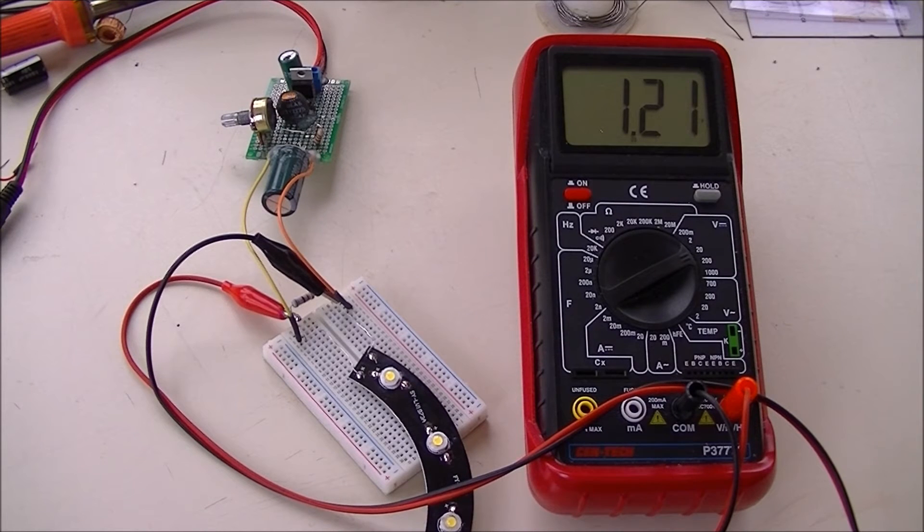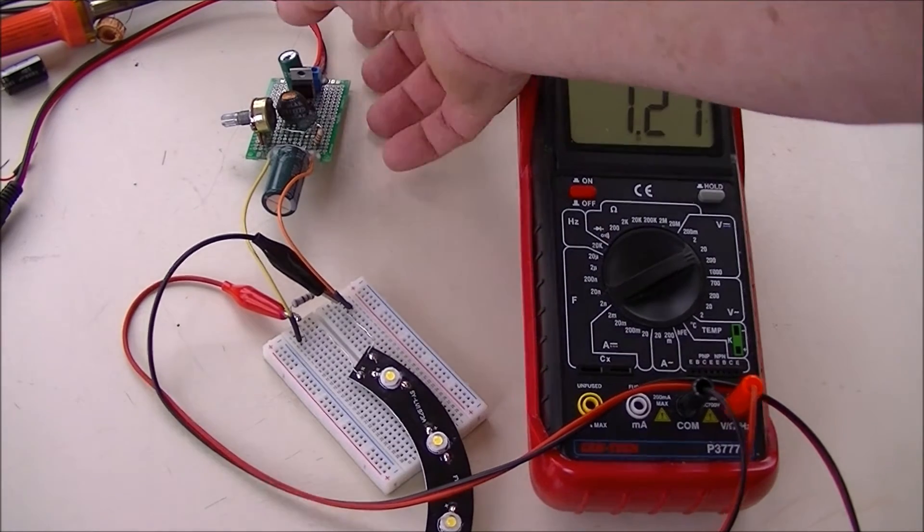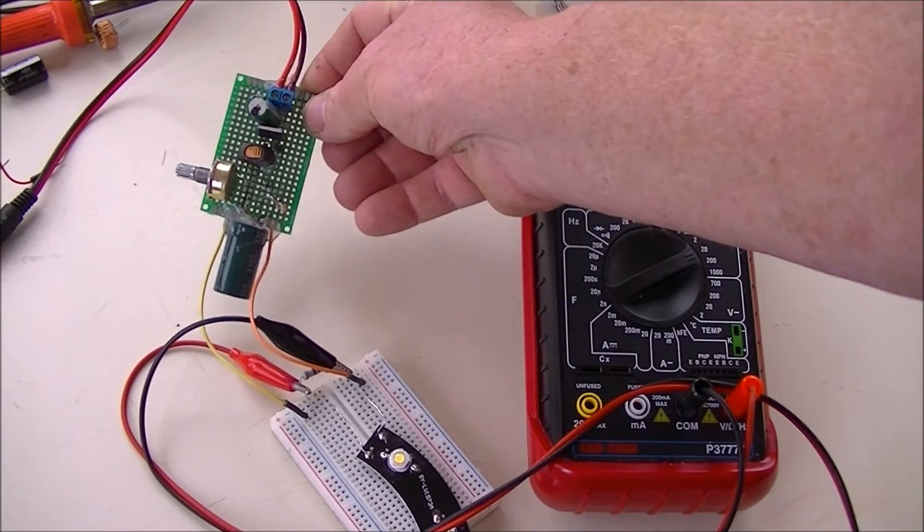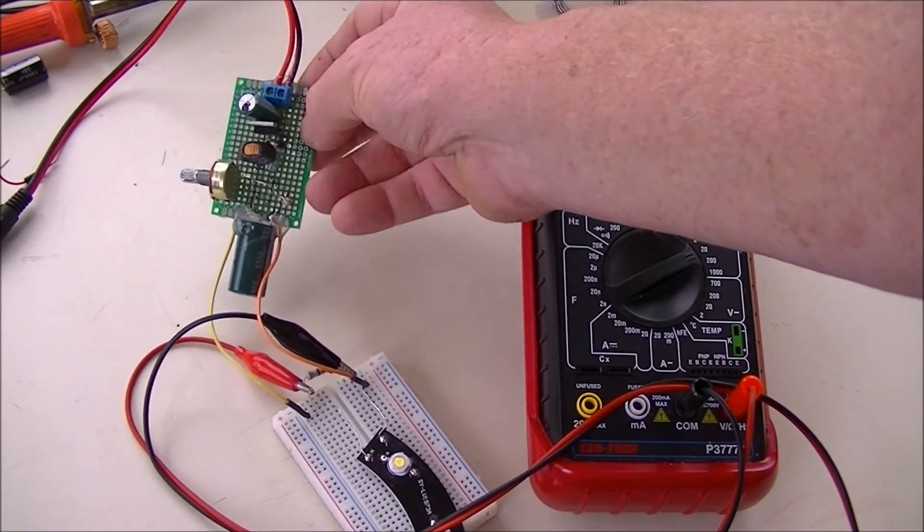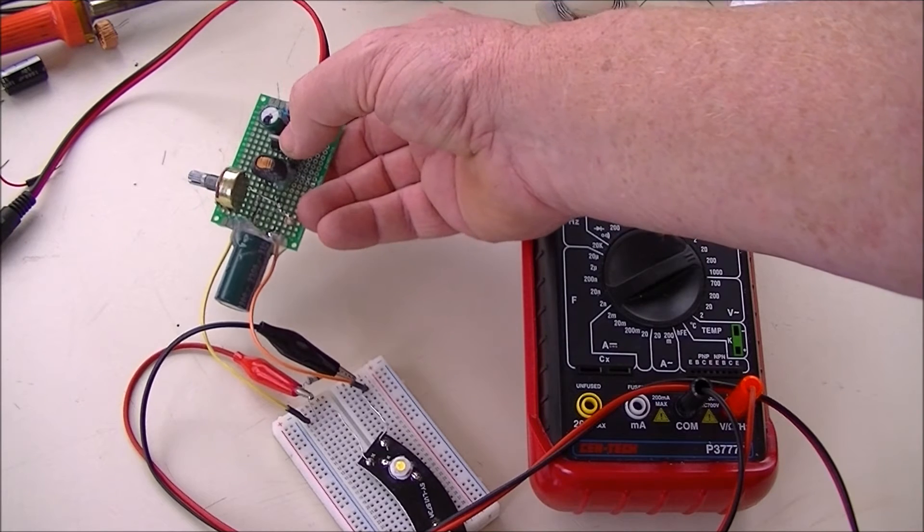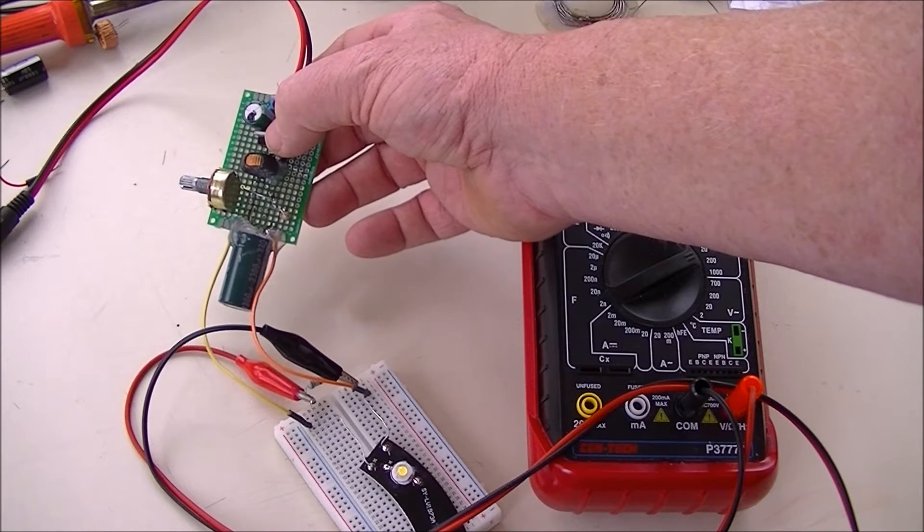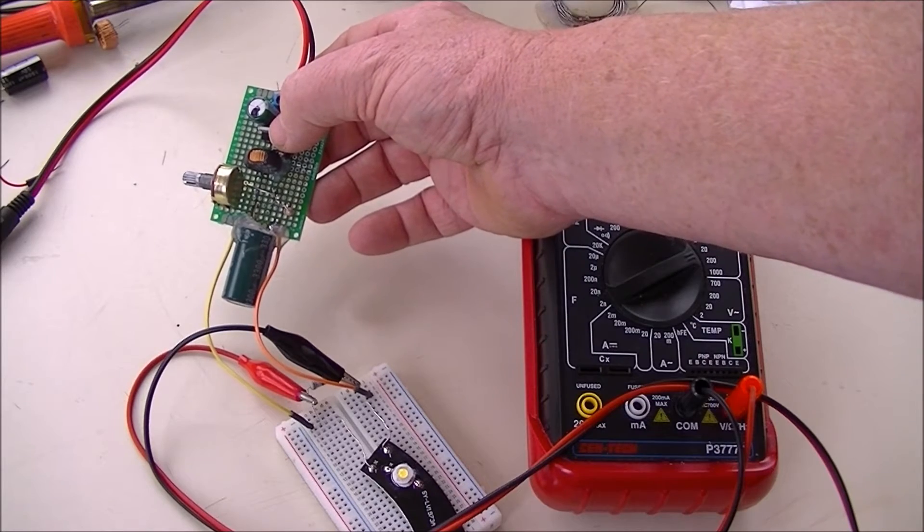Here's a demonstration of yet another switching power supply. Most of it is built onto this board. The difference is this one's a variable power supply. It consists of an LM2575-adjust.